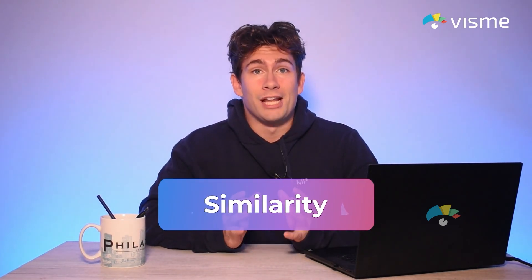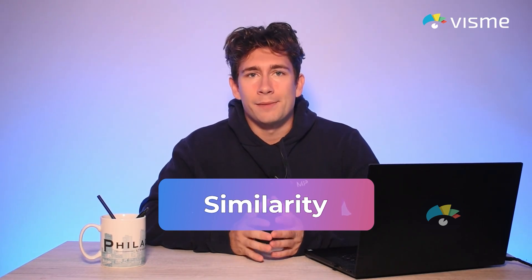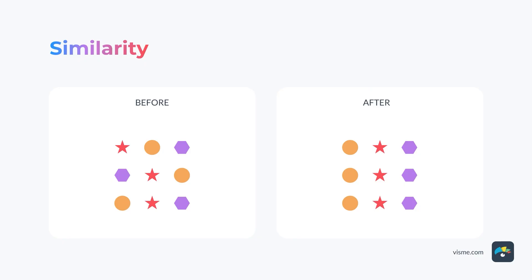The next Gestalt principle is similarity, and it states that objects with similar characteristics are perceived as more closely related than objects that share no similar features. Our minds simply group the similar objects together, regardless of their proximity to one another. Looking at this group of shapes consisting of circles, stars, and hexagons: in the example on the left, even though the orange circles aren't in the same line, they still feel related. On the example on the right, the three circles are aligned, removing all the guesswork for the viewer. Design elements can be perceived as related by sharing any sort of characteristic, including color, shape, size, and texture.